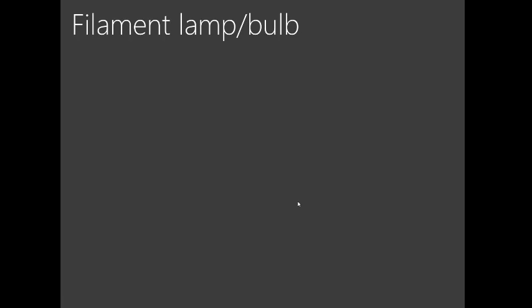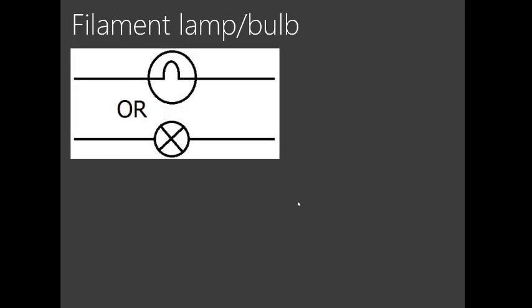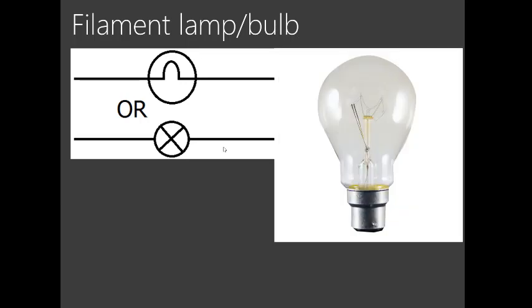Now we have a filament bulb. Everyone knows a bulb — I guess you even know the symbol. You just draw a circle, then you put something like the entrance of a church inside it. Alternatively, you can draw a circle and then cross through it with a line. Either way, it is accepted. These are the filament lamps — the bulbs. So the symbol can be drawn either way; any of the two is fine.